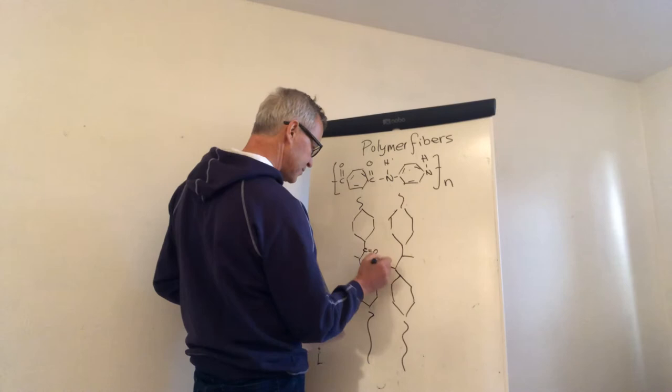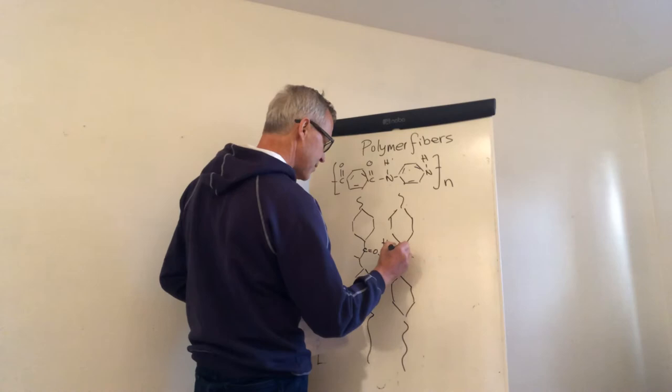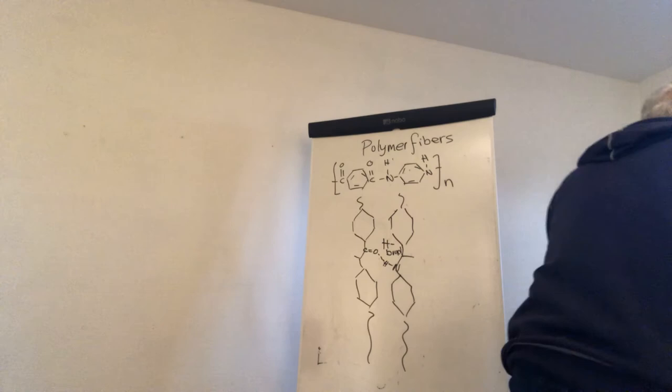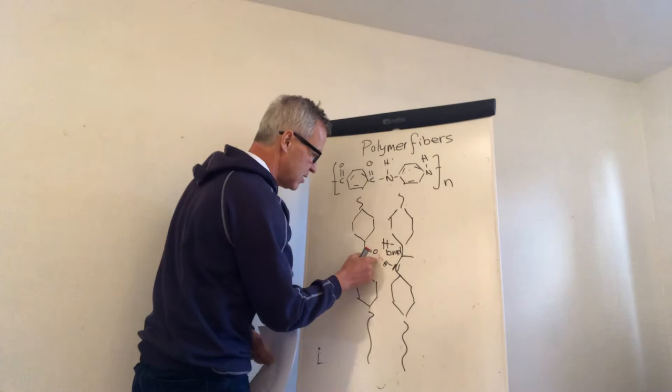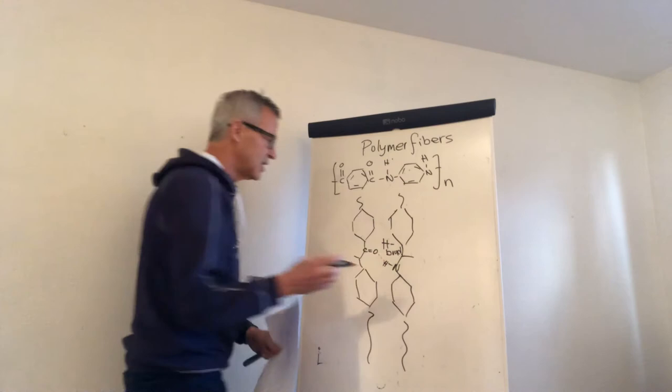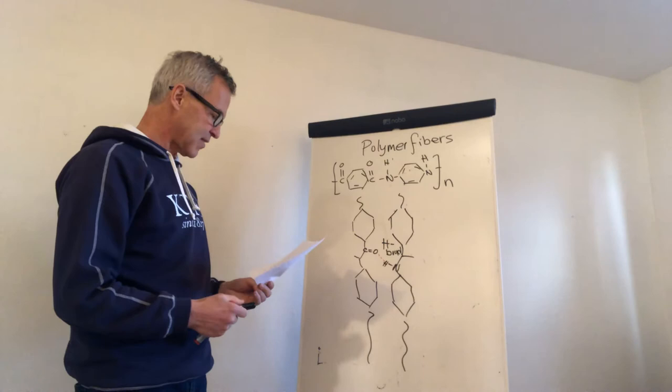We just assume that the carbonyl goes there, the amide goes there, and then here is the next aromatic ring. Basically what we do then is, let's say this is the carbonyl and this is the amide, then we form hydrogen bonding here in between. That's really the—I can make an attempt to be pedagogical and just map out the hydrogen bonding. It's a secondary interaction but still it's very important.